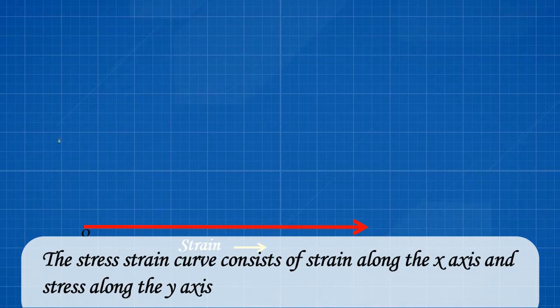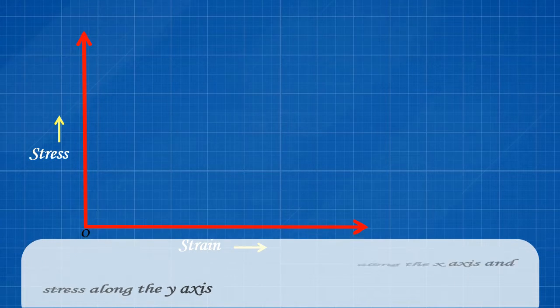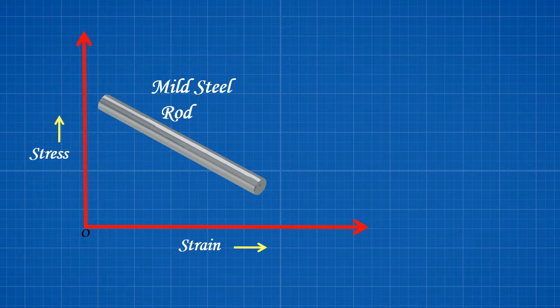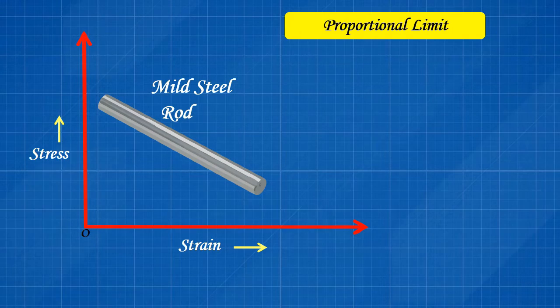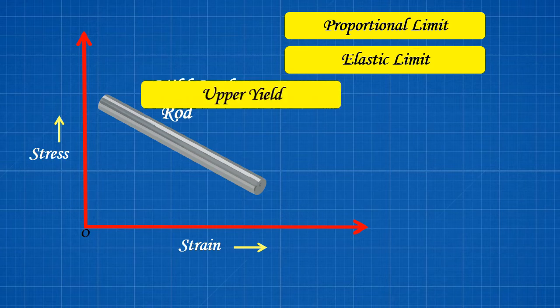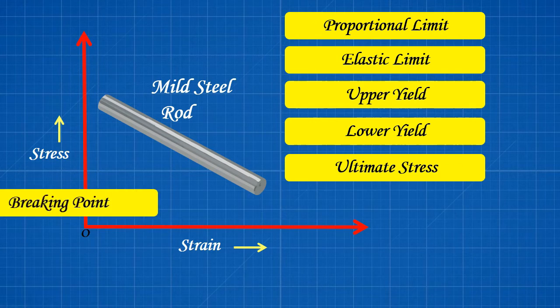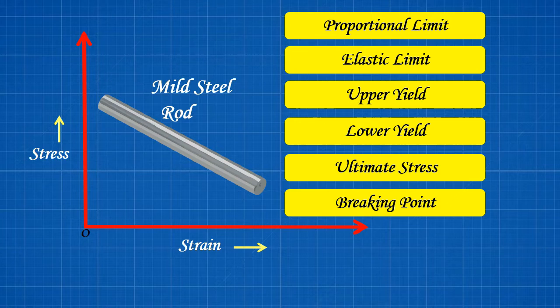The stress strain curve consists of strain along the x-axis and stress along the y-axis. Stress strain curve consist of various stages. They are proportional limit, elastic limit, upper yield, lower yield, ultimate stress, and breaking point. Now let us discuss one by one.